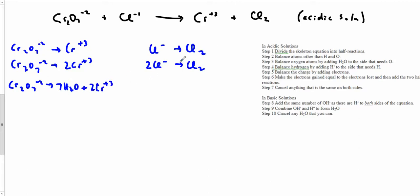This side does not need water on either side because there is no O. Balance for hydrogens by adding in H plus to the side that needs it. This guy right here doesn't need any H's, it stays the same. Over here, this guy's got 14 more H's, so it looks like I need 14 of them.